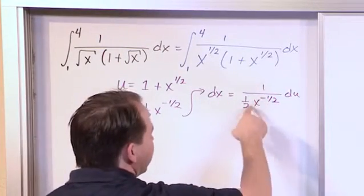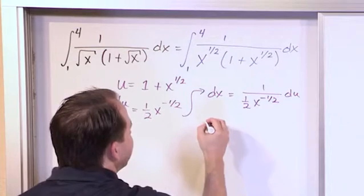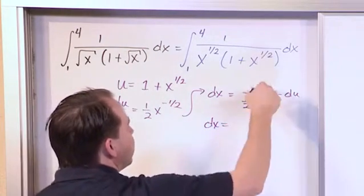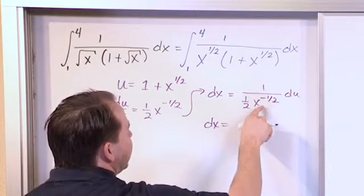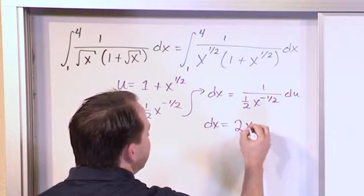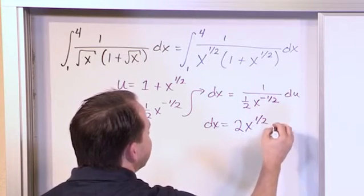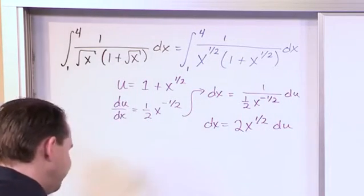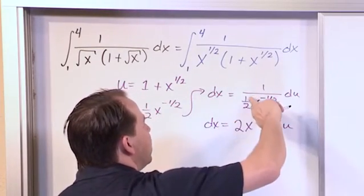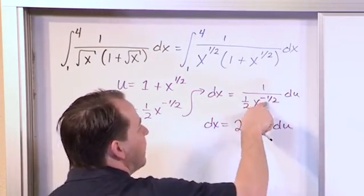Now, this looks a little ugly with the fraction on the bottom and all that, so we'll simplify it. We'll say that dx is equal to, the 2 can flip on the top, and the x to the negative 1 half can also flip to the top, so you have 2x to the positive 1 half du. Make sure you understand what's going on there. Basically, since you have 1 over 1 half, you can flip this fraction over, and the 2 will go on the top, and since you have...